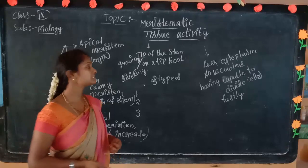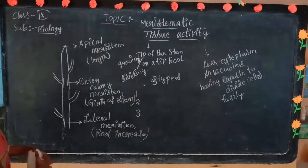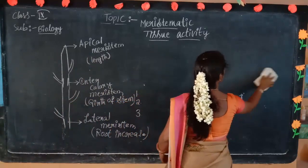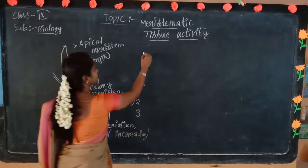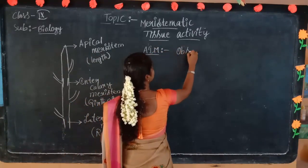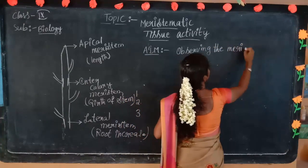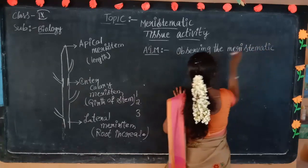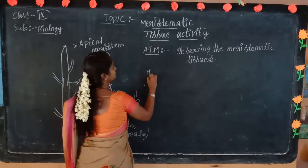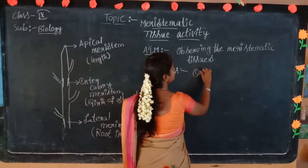These we already discussed in the last classes. With the help of this activity we will learn how meristematic tissues are going to grow. Now for the activity: observing meristematic tissues. What are the materials we need? Onions — here I am going to take one onion, two onions.